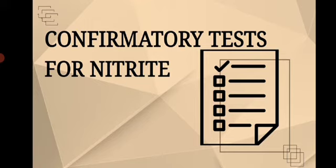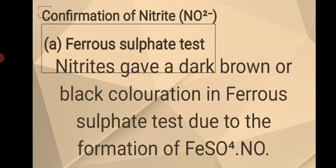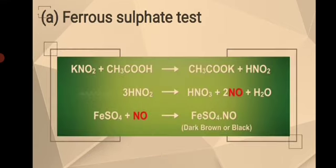Last but not least, the fourth confirmatory test is for nitrate anions. For a short introduction: nitrates are inorganic compounds containing the nitrate ion, in which a nitrogen atom is bonded to two oxygen atoms. It is a symmetric anion with equal nitrogen-oxygen bond lengths and an oxygen-nitrogen-oxygen bond angle of approximately 120 degrees. Upon protonation, the nitrate anion produces weak nitrous acid, which is unstable. For the first test for the confirmation of nitrite or NO₂⁻, which is the ferrous sulfate test: based on the theory from olabs.com, nitrites give a dark brown or black coloration in the ferrous sulfate test due to the formation of FeSO₄·NO, or nitrosyl ferrous sulfate.